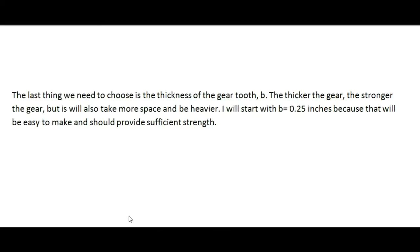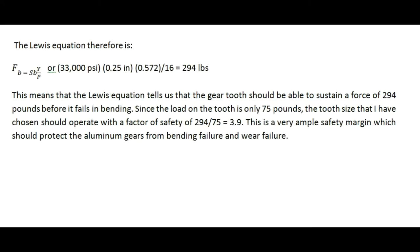The last thing we need to do is choose the thickness of the gear tooth, represented in the Lewis equation as the factor B. The thicker the gear, the stronger it is, but it will take up more space and be heavier. I'm going to start with B equal to a quarter of an inch, 0.25 inches, because it should be relatively easy to make and should provide sufficient strength. The solved Lewis equation uses 33,000 psi as the allowable stress for aluminum 6061, B is 0.25 inches, and Y — the Lewis form factor — divided by the diametral pitch, tells us that the tooth can endure approximately 294 pounds before it fails in bending.